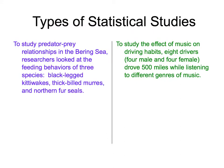We're taking a look at two types of statistical studies. On the left: to study predator-prey relationships in the Bering Sea, researchers looked at the feeding behaviors of three species — black-legged kittiwakes, thick-billed murres, and northern fur seals. On the right: to study the effects of music on driving habits, eight drivers — four male and four female — drove 500 miles while listening to different genres of music.